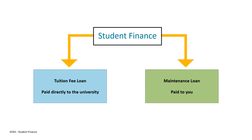Moving on, student finance is really the money that you need to be able to go to university, and this can be split into two main parts. The first is money that you borrow to pay your tuition fees — this is the tuition fee loan and that's paid directly to the university. The other part is the maintenance loan, which is designed to cover your living costs and that's money that's paid to you.